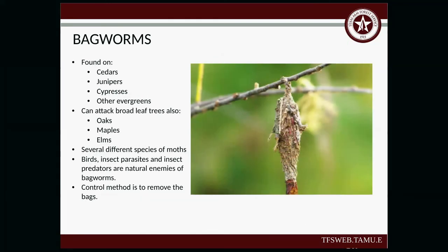Bagworms are found on cedars (junipers), cypresses, and evergreens. To clarify — we do not have cedars in the state; we have junipers. Everything people call cedars are actually in the genus Juniperus — even Eastern red cedar is actually a juniper. Common names can mislead. Bagworms can also attack broadleaf trees such as oaks, maples, and elms. Several different species of moths create these bags. Birds, insect parasites, and insect predators are natural enemies of bagworms. The control method is to remove the bags — if you see one, just go in and remove it.